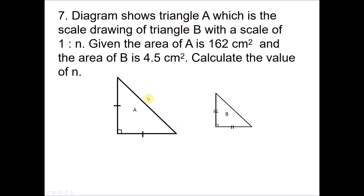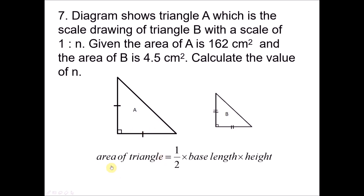Question 7: Triangle A is the scale drawing of triangle B with scale 1 to n. The area of A is 162 cm² and the area of B is 4.5 cm². To find the scale, we cannot use area directly — we must find the side lengths first. Additional information from the diagram: the base and height of each triangle have the same value, so we can use the area formula to find the side lengths.